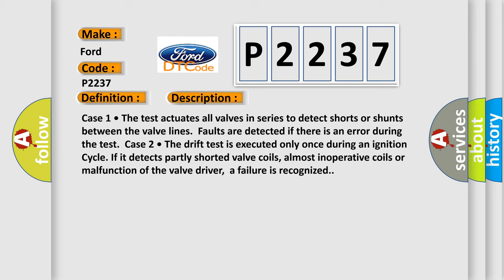Case 1: The test actuates all valves in series to detect shorts or shunts between the valve lines. Faults are detected if there is an error during the test. Case 2: The drift test is executed only once during an ignition cycle. If it detects partly shorted valve coils, almost inoperative coils, or malfunction of the valve driver, a failure is recognized.